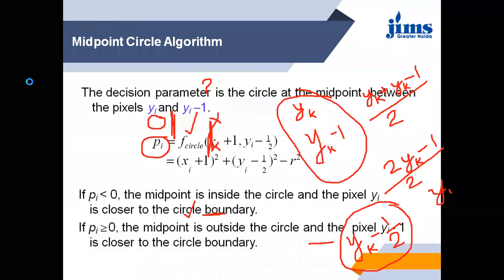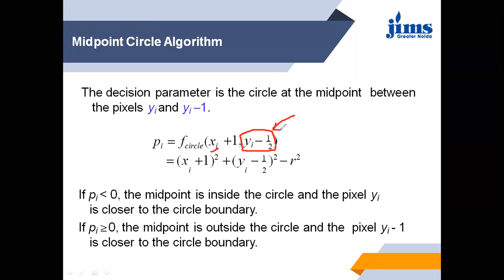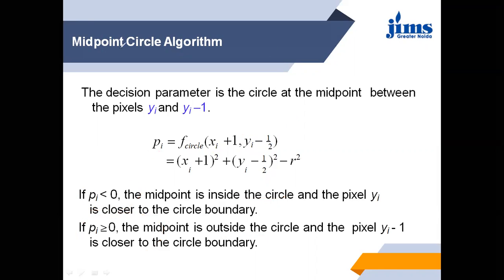You will see in the next slide — here we are taking the value of yk equals to yk minus half. This is the mid value we are taking. We are taking the next value xi plus 1, and we are taking the mid value of yk and yk minus 1. This is our decision parameter. By finding this value we can determine that the point is inside the circle or outside the circle. If pi is less than 0, the point is inside the circle; if pi is greater than or equal to 0, the point lies outside the circle.